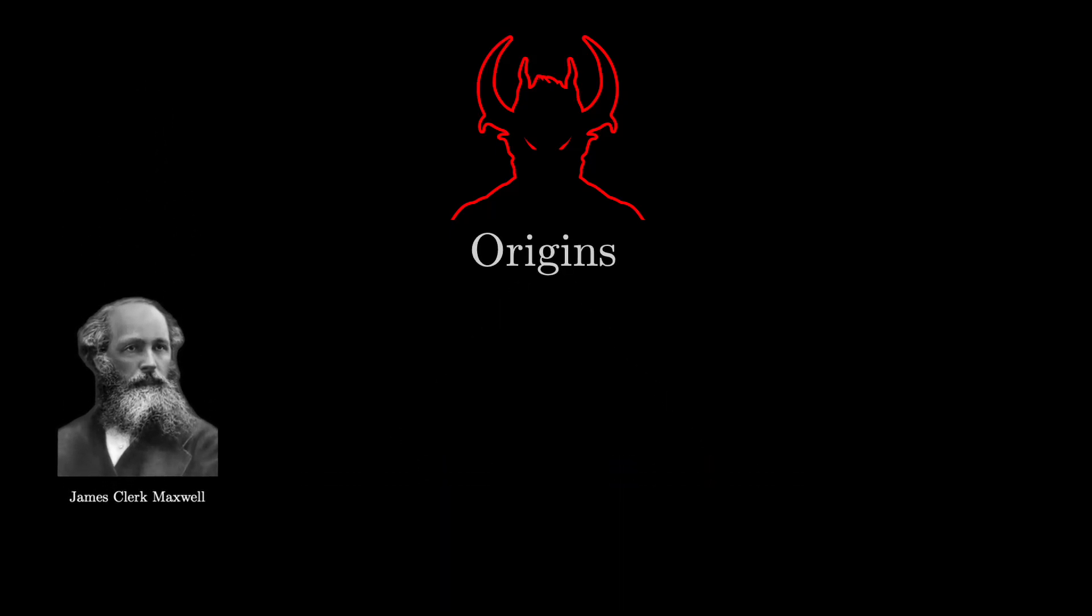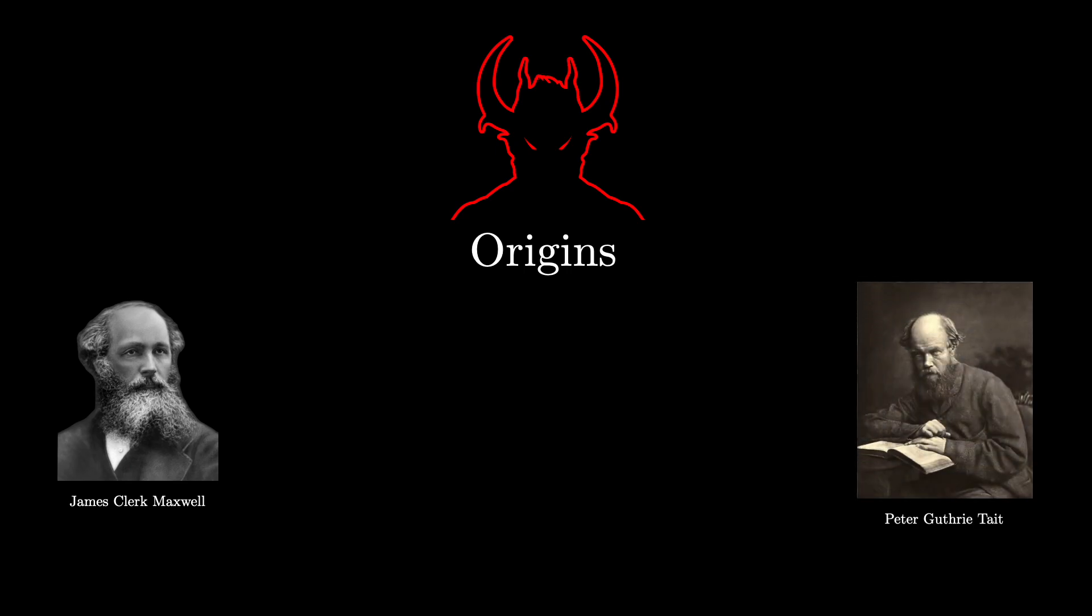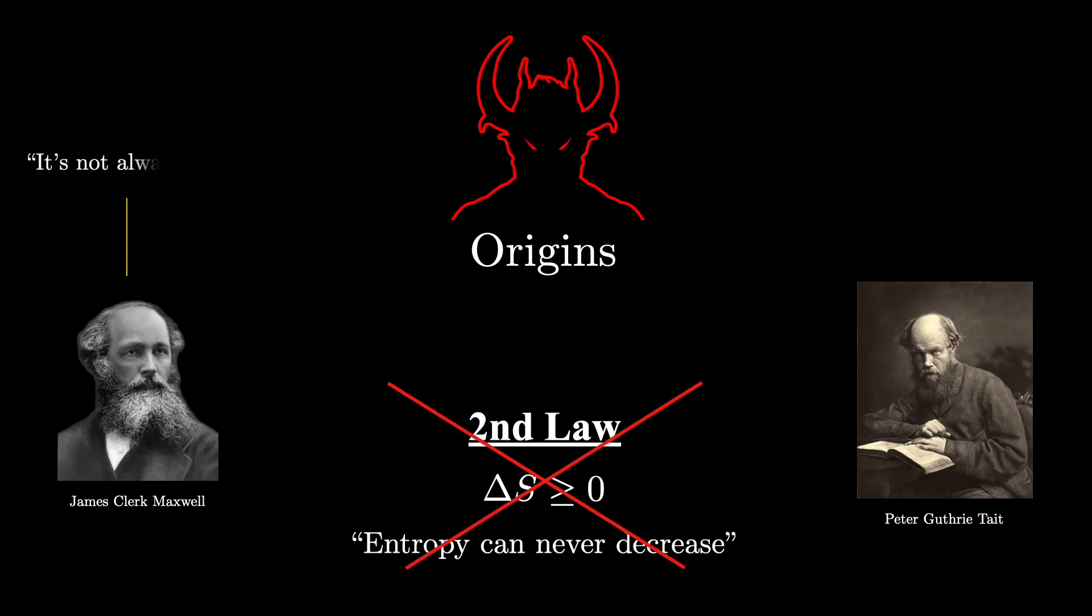The origins of this demon can be traced back to 1867 when James Clark Maxwell began a series of letters written to his fellow Scottish physicist Peter Guthrie Tate. In these letters, Maxwell reveals that he believes the second law only has statistical validity. It is not universally valid and can be contradicted in certain circumstances. Furthermore, in an attempt to convince others, he's created a thought experiment which contradicts the famous second law.